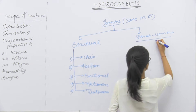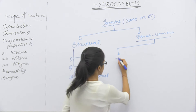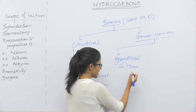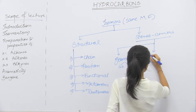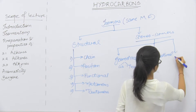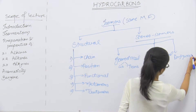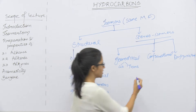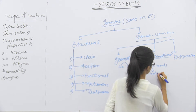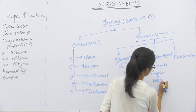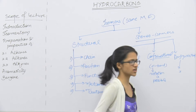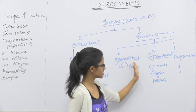For stereoisomers, we have three categories: geometrical isomers — cis-trans — which is very simple; then conformational isomers, which we discuss in the case of alkanes when sigma bond rotation is possible; and configurational isomers when rotation is not possible. Configurational includes enantiomers and diastereomers, but we will focus on geometrical and conformational.